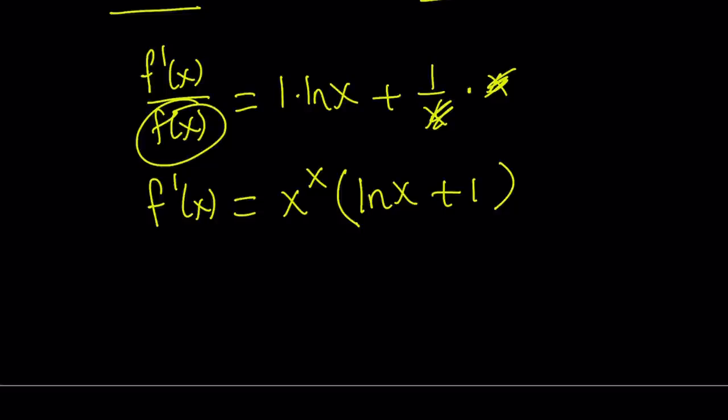Now, x to the power x cannot equal 0 because it's only defined for positive numbers and can't be 0. 0 to the power 0 is indeterminate. So, ln x plus 1 needs to be 0. And from here, we get ln x equals negative 1, which implies x equals e to the power negative 1, which means x equals 1 over e. That is a critical point for our derivative.